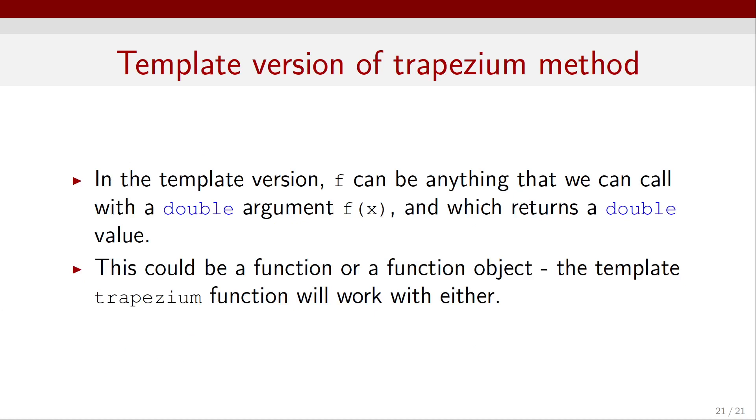Now in this template version, F can be anything that we can call with a double argument, like f of x, and which returns a double value. This could be a function or a function object. So in fact, the template trapezium function will work with either of those.